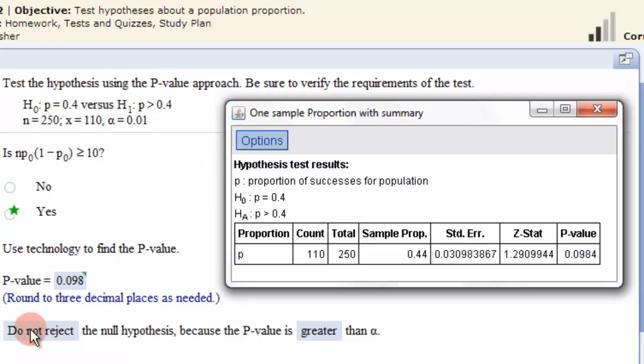Now, the last question asks us whether we reject or not reject the null hypothesis. And we reject the null hypothesis because this value here is greater than the level of significance. If this value would be less than this value.